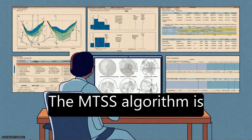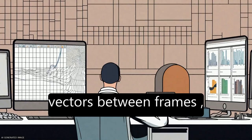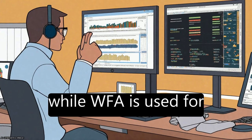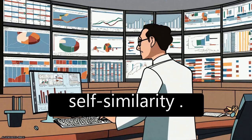The MTSS algorithm is used to compute motion vectors between frames, while WFA is used for coding based on the idea of fractal self-similarity.